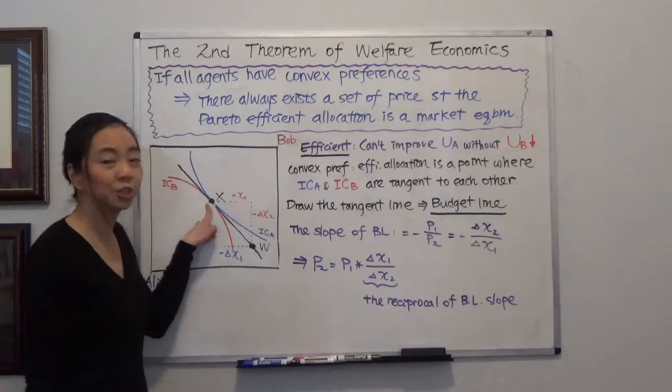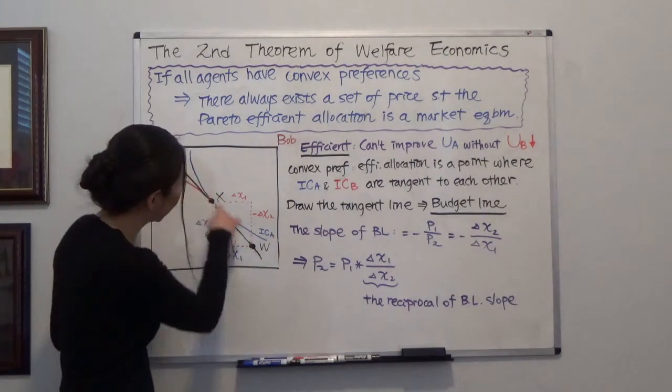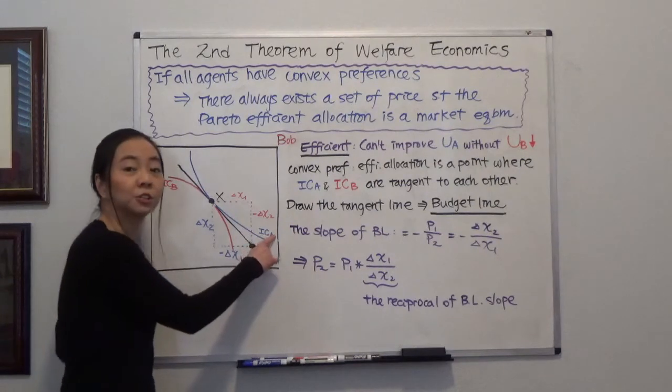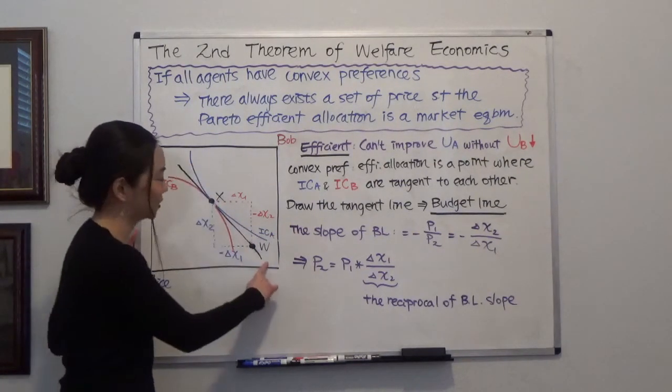And since we have this tangent point, we can also draw a straight line, a tangent line, a line that is tangent to this indifference curve of Alice and Bob. So we will call this the budget line.